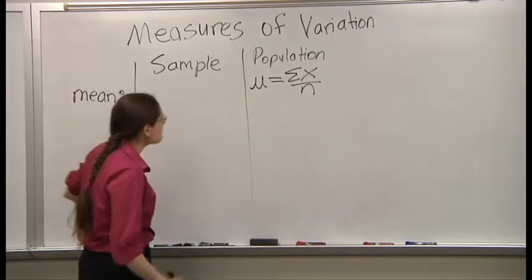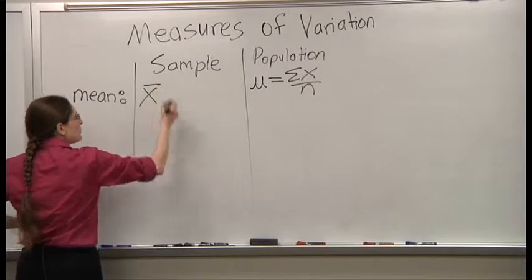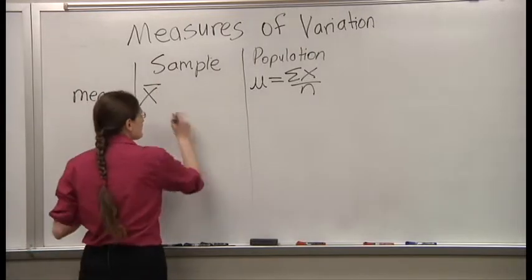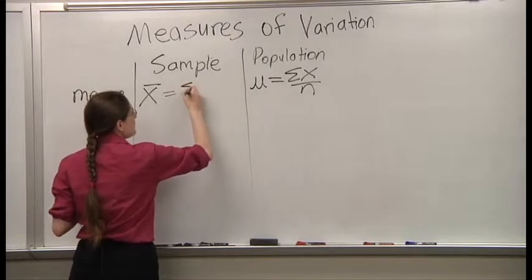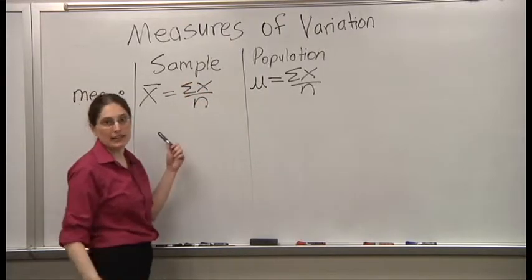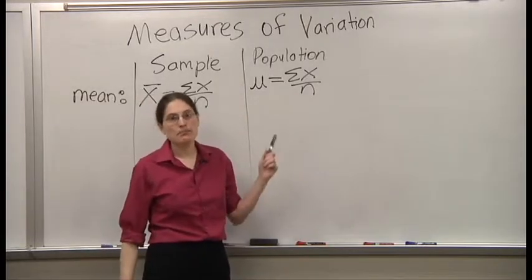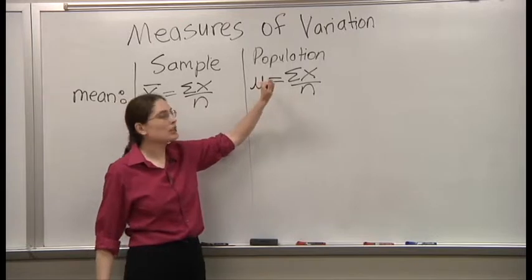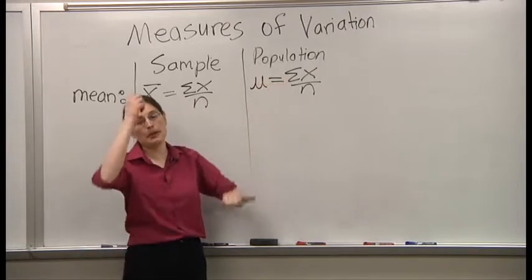If you're doing just a sample, we have a different symbol: X with a bar over it, X bar. Luckily, you find it exactly the same way. But X bar is the mean of a sample. Mu is the mean of a population.